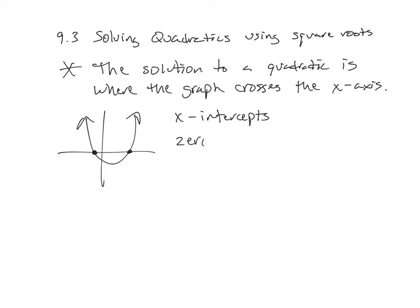Or we're looking for the zeros — that was another term for where it crosses the x-axis. So when you have a quiz later this week and you see a graph and it wants to know the solutions, it's where the graph crosses the x-axis. It doesn't matter what the graph looks like. Where it crosses the x-axis is the solution. That's a major definition or concept you need to understand.